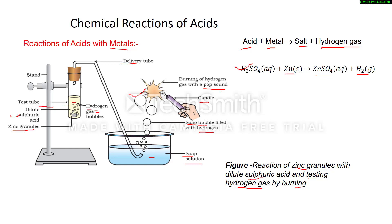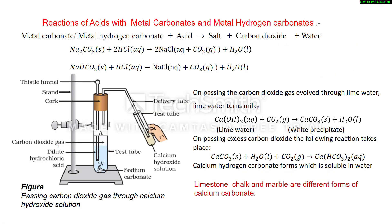Acids react with metals and form salt and hydrogen gas. Next are the reactions of acid with metal carbonates and metal hydrogen carbonates. When these react with acid, salt, carbon dioxide, and water are formed. For example, Na2CO3 sodium carbonate when reacted with HCl forms NaCl, carbon dioxide gas is evolved, and water is formed.